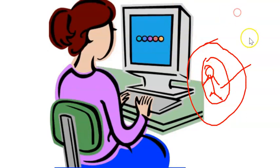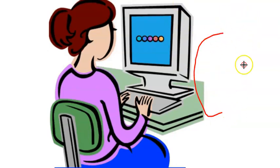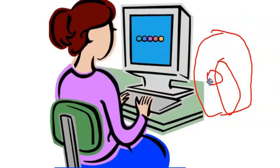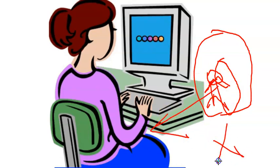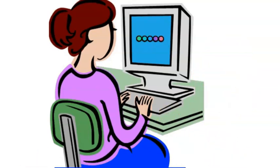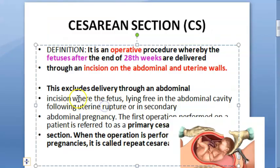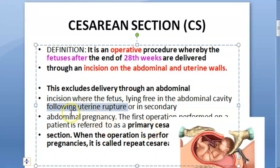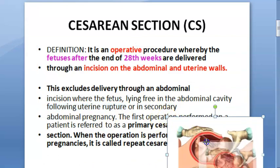For some reason, let us say the baby is lying outside — the abdominal wall is here and here is the uterus, but the baby is lying outside for whatever reason, such as an ectopic or it has come out via a ruptured uterus. If you are removing this fetus, this is not caesarean section. It does not include an abdominal incision where you are delivering a fetus lying freely in the abdominal cavity following rupture of the uterus or in secondary abdominal pregnancy.